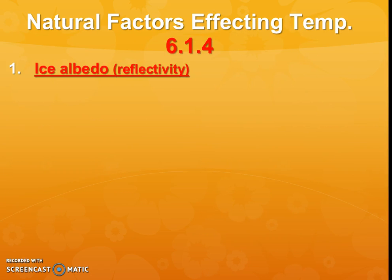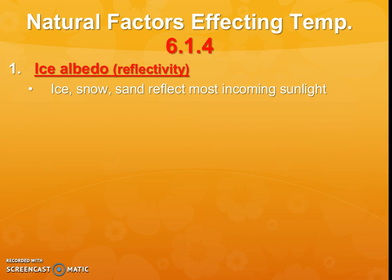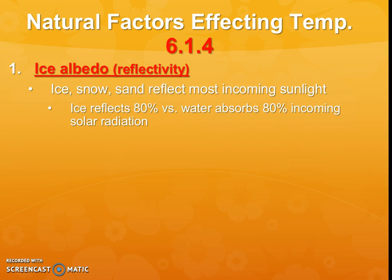One of the players we mentioned earlier is ice reflectivity, called albedo. Remember that ice, snow, and sand reflect incoming light the most, meaning that energy that could have been absorbed by the ground is now going back away from Earth — which is a good thing when we don't want our temperature to go up too much. Ice reflects about 80% of incoming light, while water absorbs 80% of incoming light. So it is much better to have ice than water. Water is going to trap that light and warm up the ocean compared to ice, which acts like a mirror.